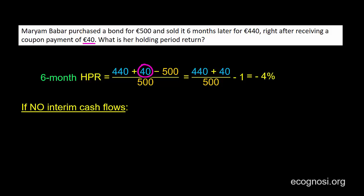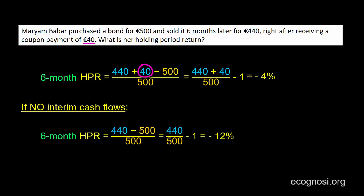Assuming you did that, the 6-month holding period return would be negative 12%. The loss would be much greater relative to before. So although interim cash flows significantly decrease the loss from the fall in the price of the bond, they are not enough by themselves to turn the loss into a gain — they only manage to partially offset the loss. Let's continue in the next video.